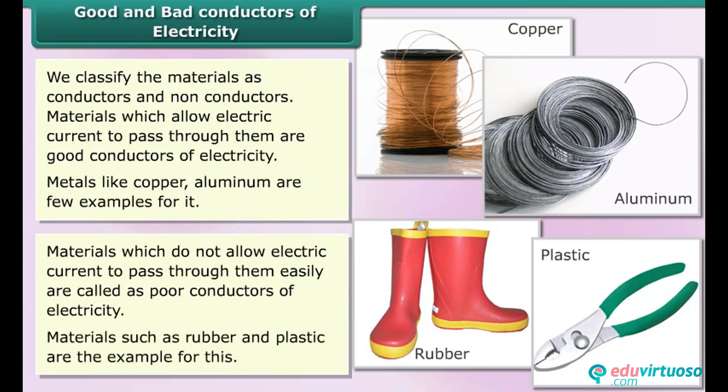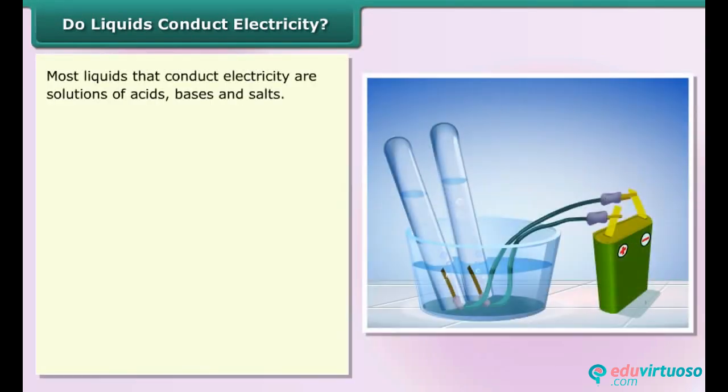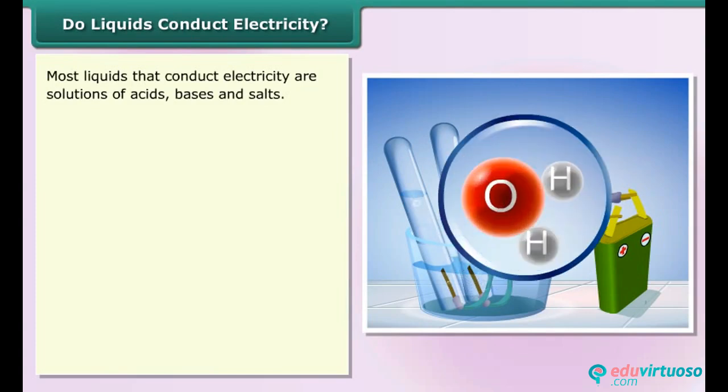Materials such as rubber and plastic are examples of poor conductors. We use a tester to test the conductivity of materials which are in solid state. Do liquids conduct electricity? Most liquids that conduct electricity are solutions of acids, bases and salts.